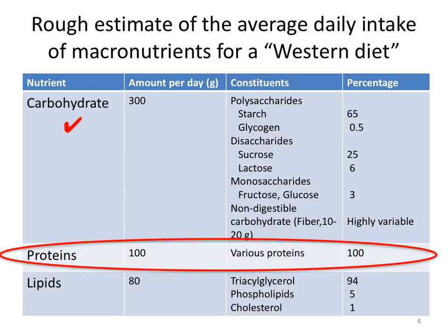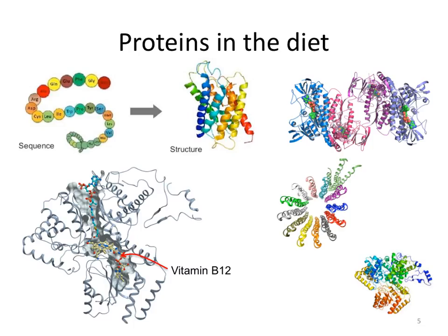In the first lecture we focused on carbohydrates. Here we'll talk about protein digestion and absorption. Remember that proteins are long linear polymers of amino acids that fold into specific structures that give their functions. This is true whether we're thinking about proteins that function within our body or the proteins within our foods. We eat hundreds if not thousands of different proteins in our diet and they all have different structures.